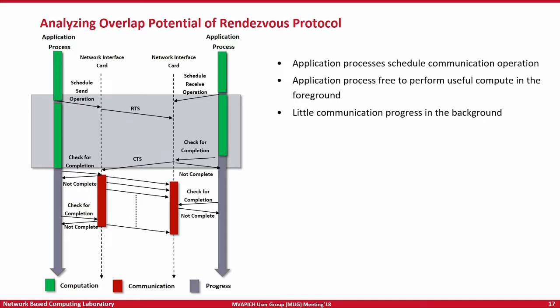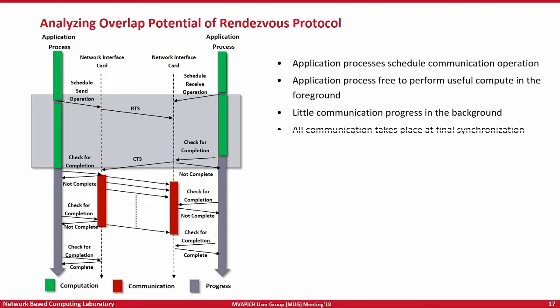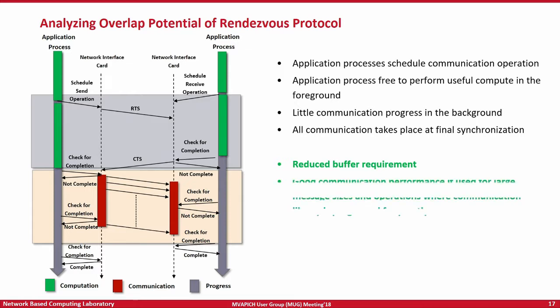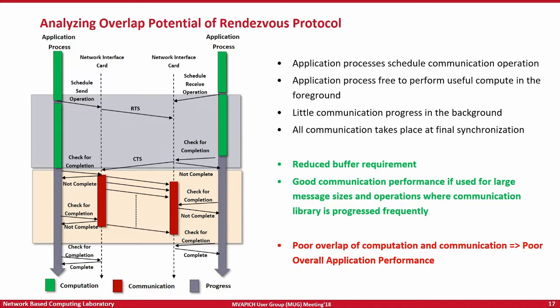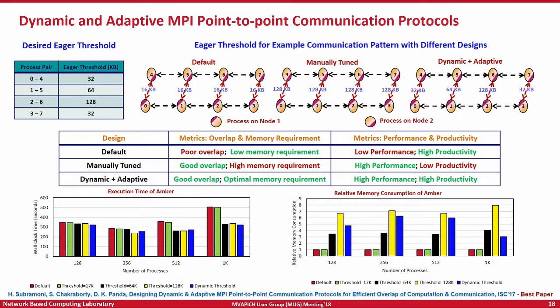Cases like Alessandro's, where you are trying to get better overlap of computation and communication but not getting it, could be because of this situation — this is just one example; there are lots of other corner cases. The benefit of having communication finish at final synchronization is that if your application enters the MPI library frequently enough to progress communication, you get good performance and minimal buffer requirement. But it is easy to say 'poke the MPI library frequently' and very hard to do in practice. Typically you get very poor overlap, leading to poor overall application performance. We have designs coming in future releases of MVAPICH2 that try to do this in a dynamic and adaptive manner, resulting in high performance and high productivity.